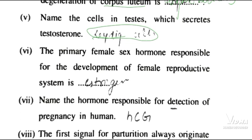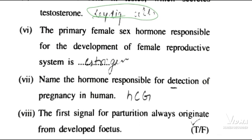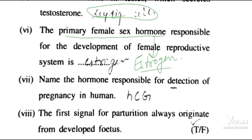The primary sex organ responsible for the development of the female reproductive system — the primary female sex hormone is estrogen, and the primary male sex hormone is testosterone.